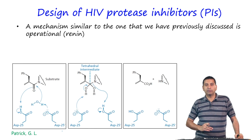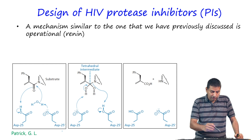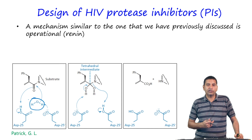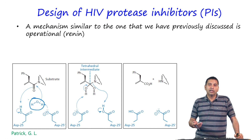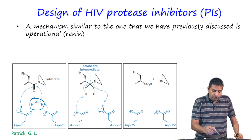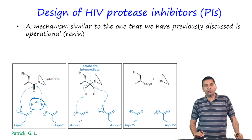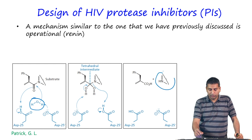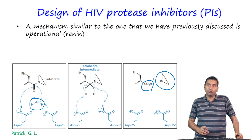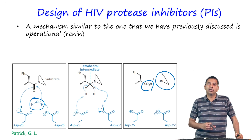The mechanism is similar to what we discussed previously for renin. The bridging water molecule is activated by the aspartate residue, and by assistance from the aspartate this water molecule attacks the amide bond, forming a tetrahedral intermediate which then subsequently undergoes cleavage to produce an amine and a carboxylic acid. A very similar mechanism is operational in HIV protease.